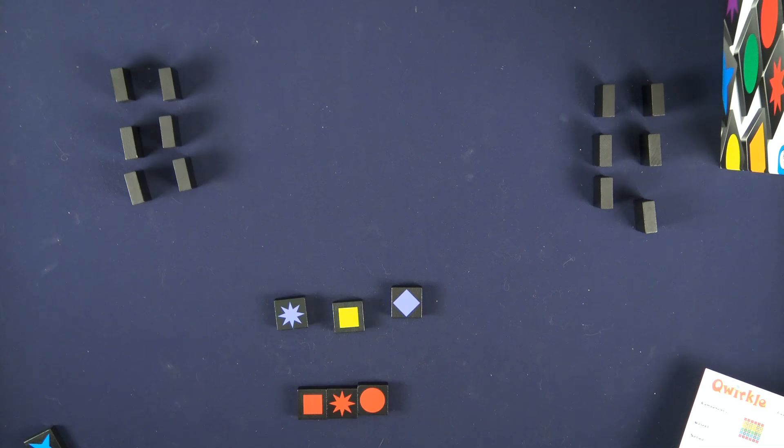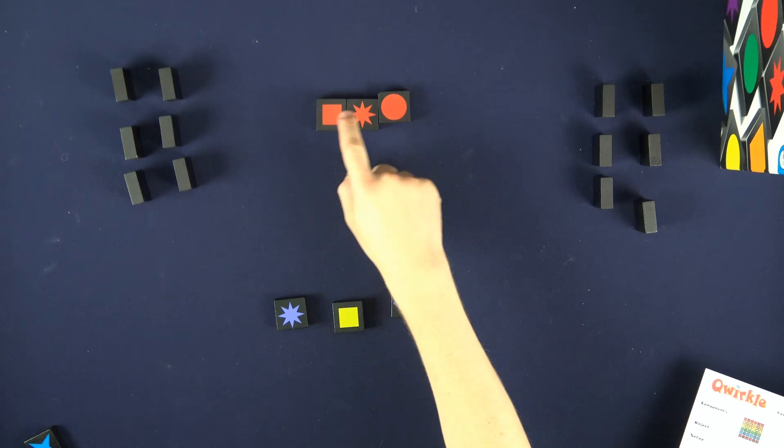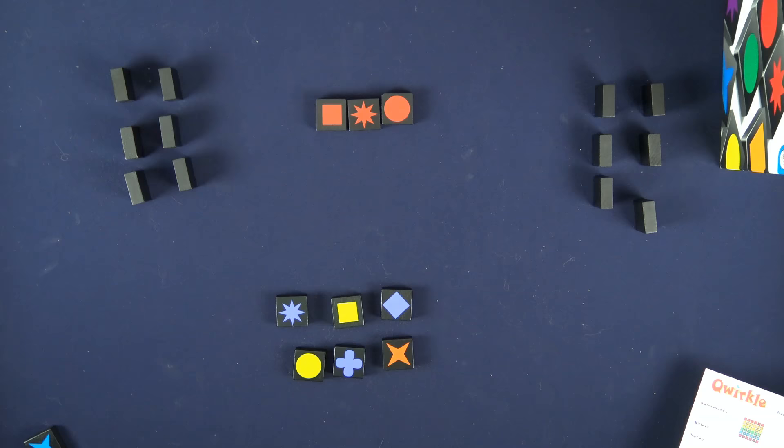The starting player will be the player who has the most tiles of the same attribute, so let's consider that I had three of the reds and no one else had more than that. So I would start placing them there and I'm going to get one point for each tile. After placing tiles you're going to draw up so you always have six tiles in your hand at the end.